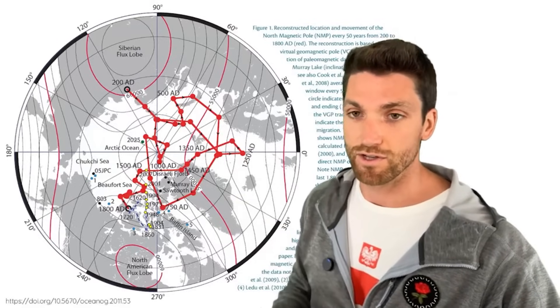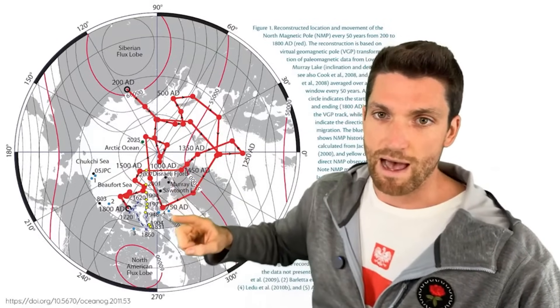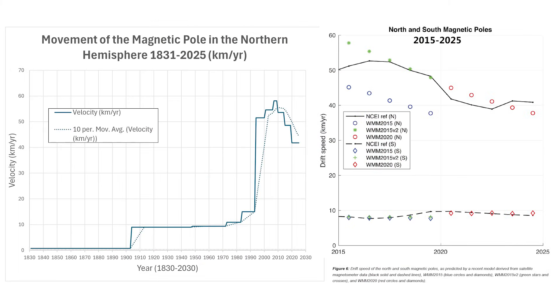Now, some of the confusion, just to fill you in, is that this rapid acceleration occurred from 1990 up to basically now. It's starting to decelerate. It's only going about 40 kilometers per year, whereas it was going up to 60 at one point in the early 2000s and mid-2000s.